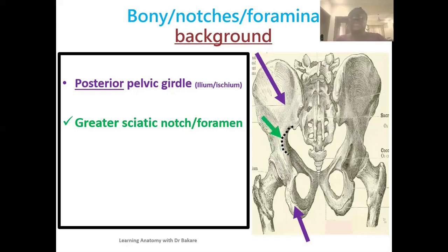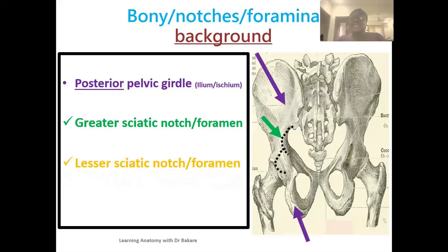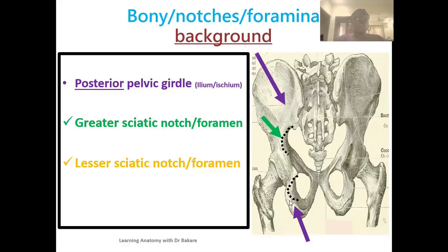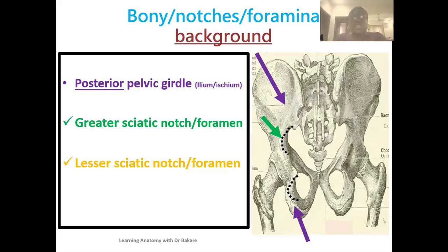Another important landmark is the lesser sciatic notch, also highlighted in dotted black. This lesser sciatic notch is an indentation created on the ischium, located inferior to the greater sciatic notch. It is also further transformed into the lesser sciatic foramen by a ligament, and we will be highlighting the responsible ligament as we proceed. It is important to identify these landmarks at specific regions of the ilium and ischium.